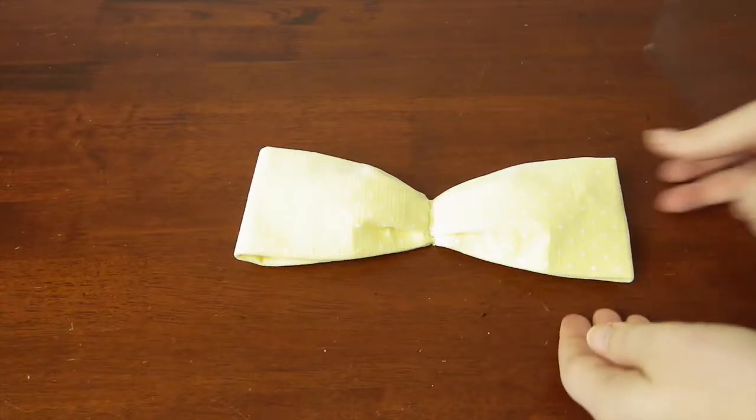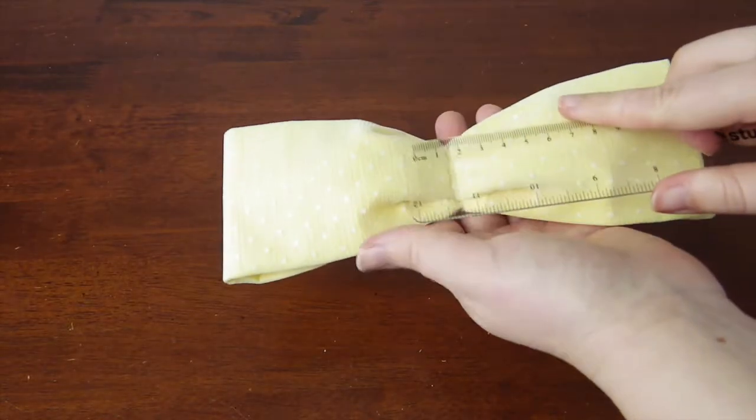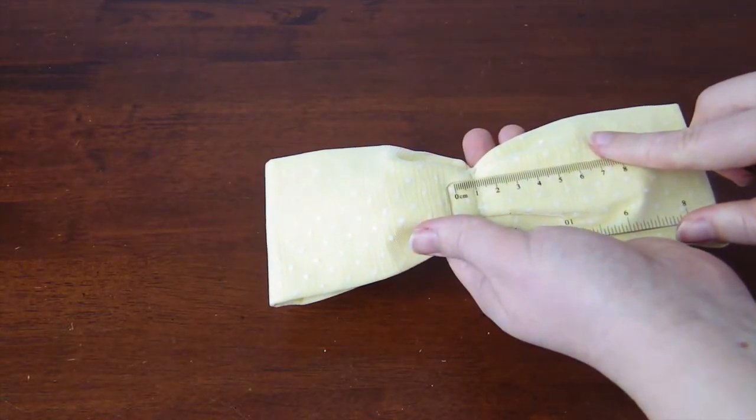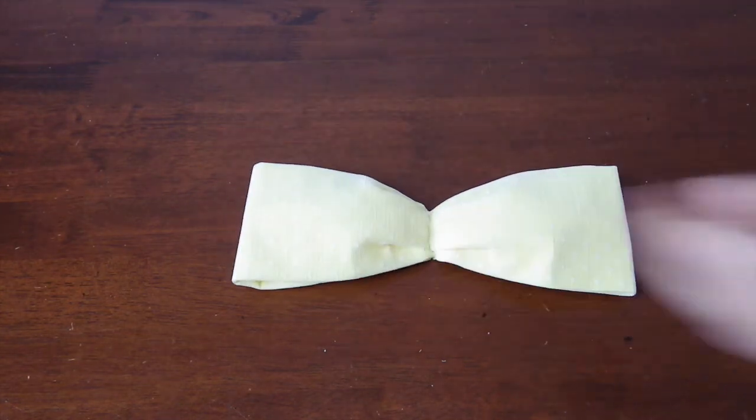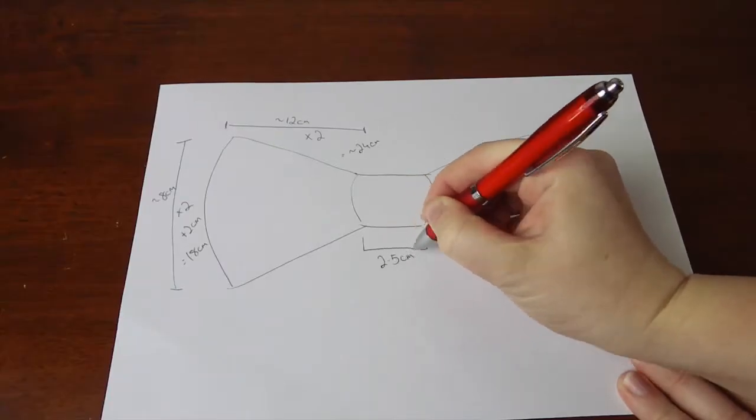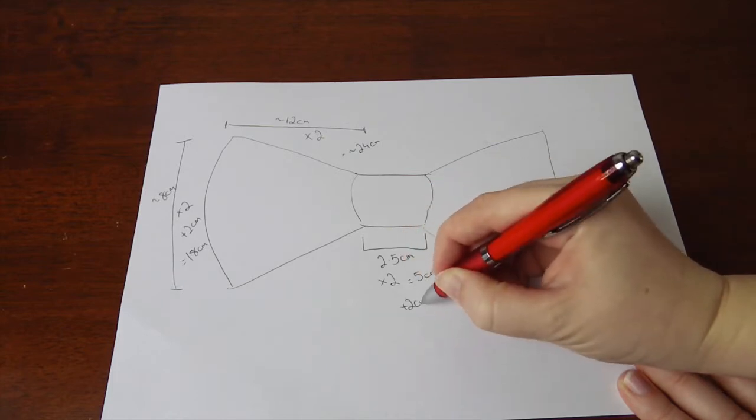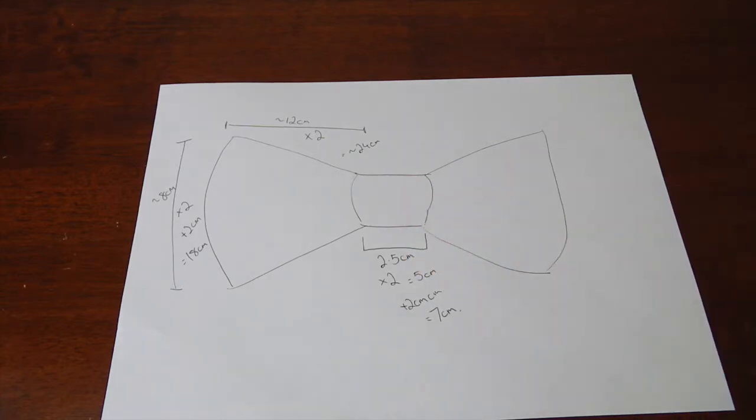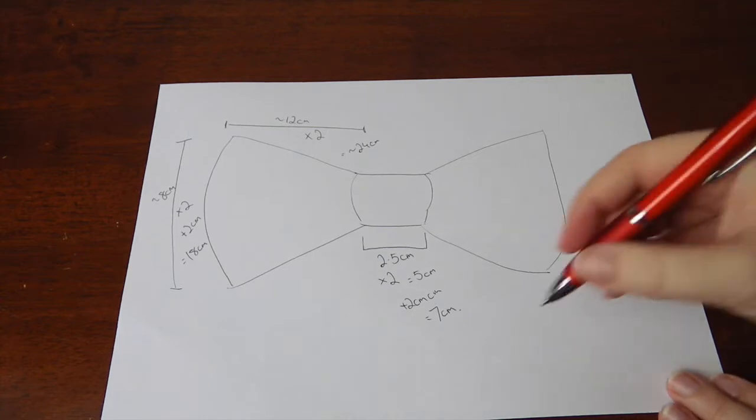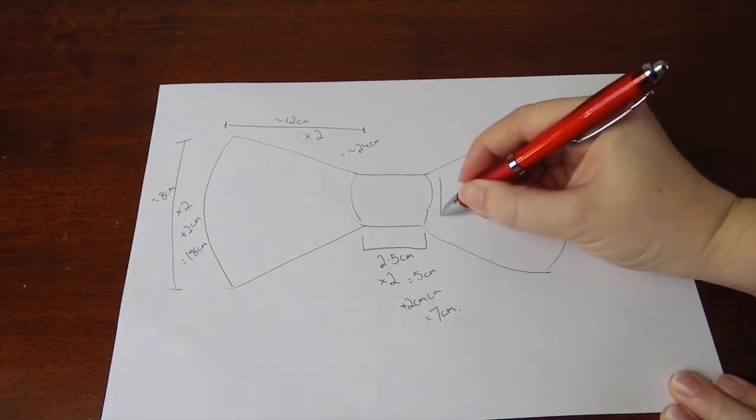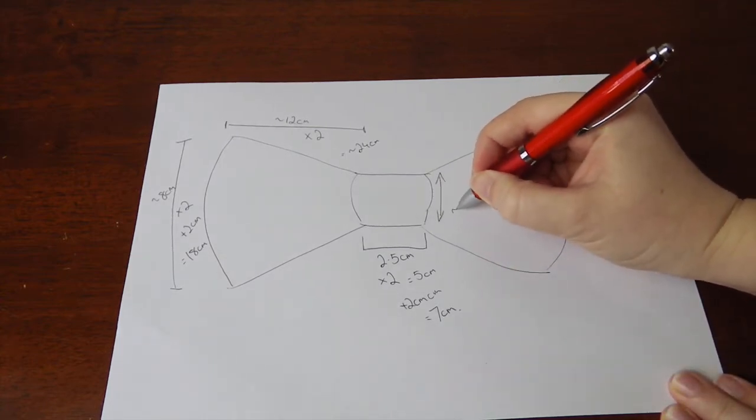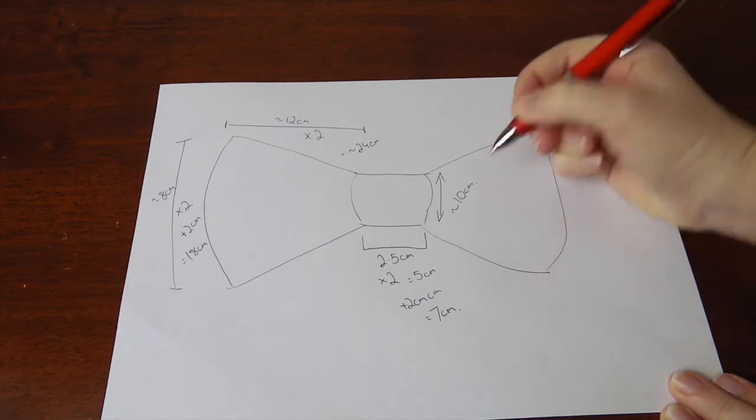Next up is to create the fake knot. Measure out what you think would look good. For this project, I'm thinking 2.5cm is the way to go. Once again, I multiply this by 2, and add 2cm for seam allowance. I decided that I need the length to be about 10cm, but it's better to go over rather than under, as you can always cut excess fabric off.